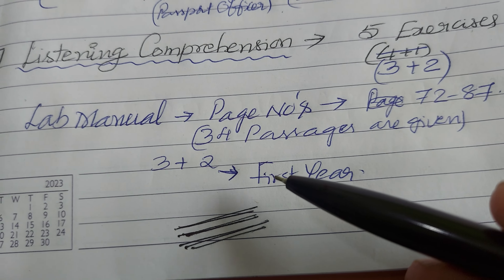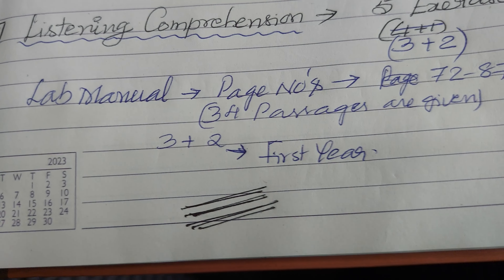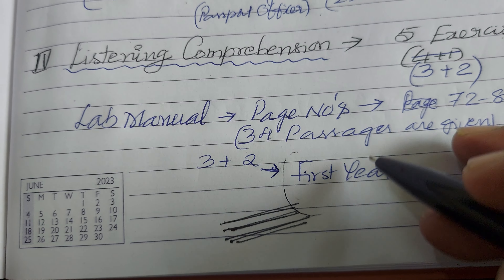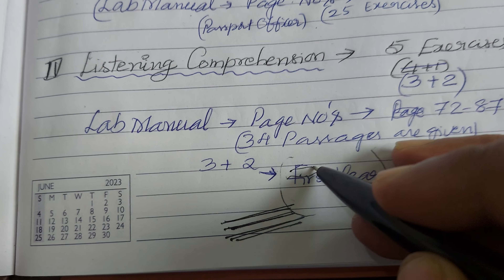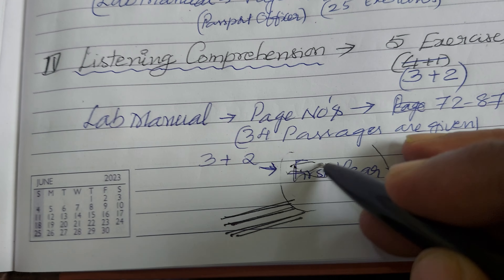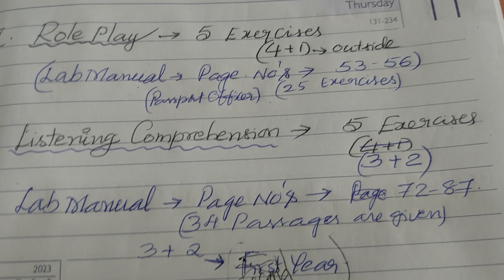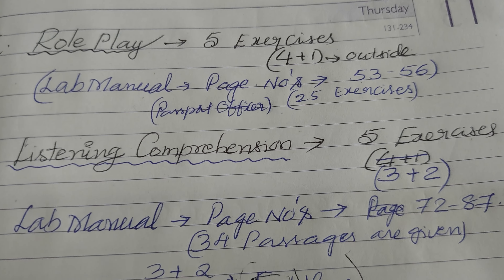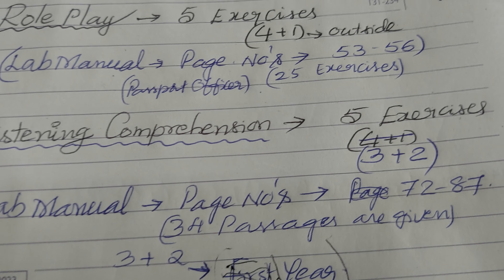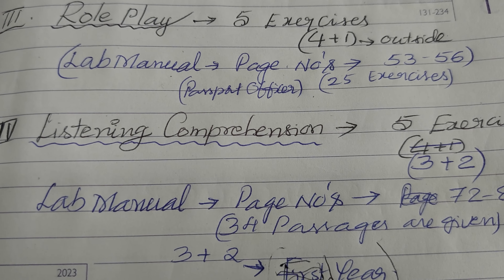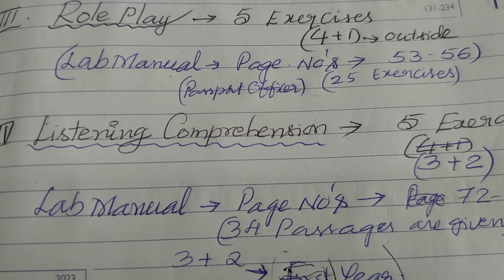For the two outside, take passages from any other textbook — your second year textbook or tenth class passages. So three from the manual, two from outside: that's three plus two for listening comprehension. Write passage, questions, and answers for all five.